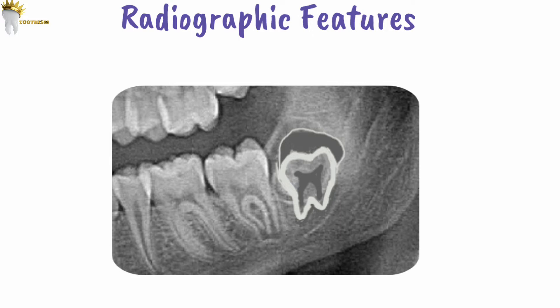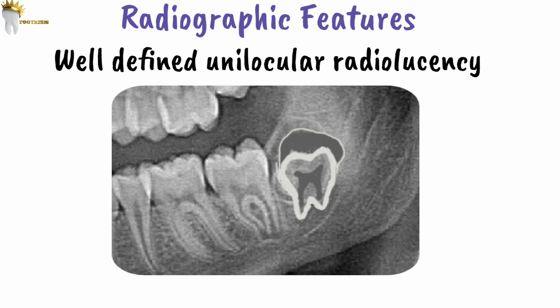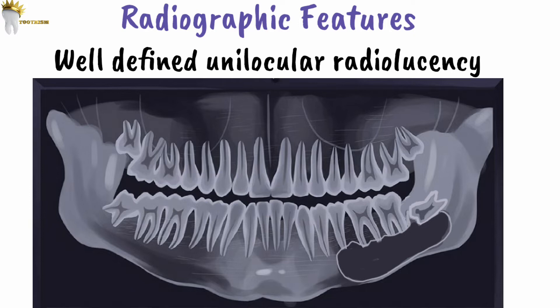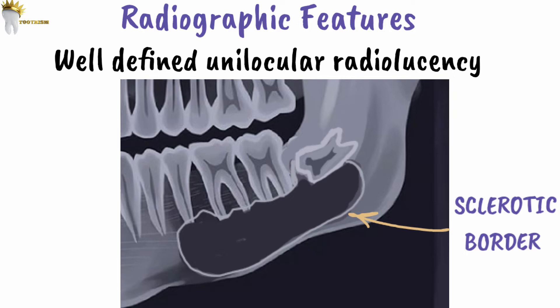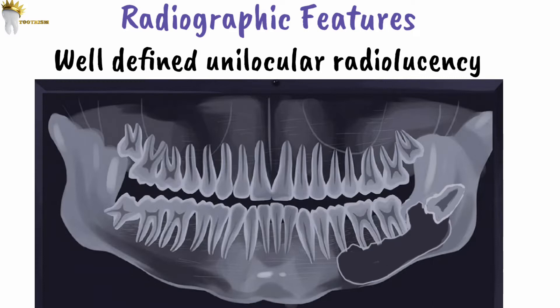On radiograph, a dentigerous cyst appears as a well-defined unilocular radiolucency — meaning a single chamber or cavity. It often has a sclerotic border, meaning the margin appears thickened due to thickening of the bone. This cyst can also cause root resorption of adjacent teeth.